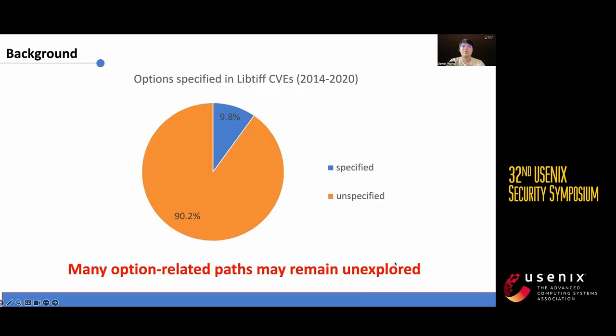Our investigation into 103 disclosed CVEs within LibTIFF from 2014 to 2020 revealed a concerning trend. Only 20 out of the total options were specified, accounting for a mere 9.8 percent of all options. This finding highlights the fact that a considerable number of paths related to options may remain unexplored.